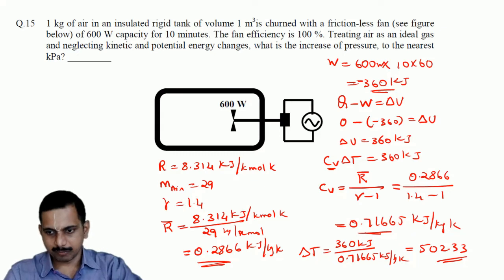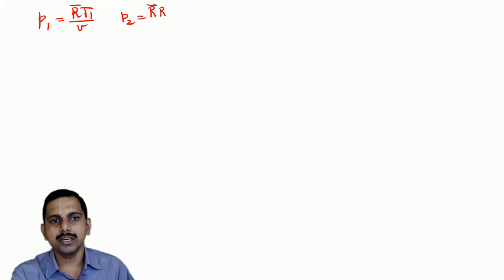After getting 502.33 as the temperature change, we need to find the pressure rise. Initially P1 equals RT1/v. Specific volume does not change, so P2 equals RT2/v. Therefore P2 minus P1 equals (R/v) times (T2 - T1).